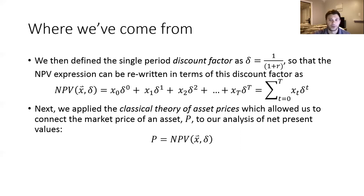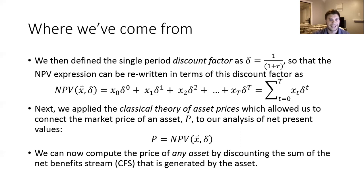The next thing we had done is apply the classical theory of asset prices, which utilized a no-arbitrage argument to argue that the present value — really the net present value — of any asset's future cash flow stream would define the fair market price of that asset. This allowed us to link the actual price of the asset to the present value of the benefit stream it generates. Now we have a nice framework where we can price any asset, whether it's a financial asset or agricultural land that yields a certain value of crops each period.